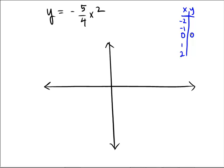When you plug in the number positive 1, 1 squared is 1, so I'm going to get negative 5 fourths. And due to symmetry, I'm also going to get negative 5 fourths here, so I'm going to fill them both in.